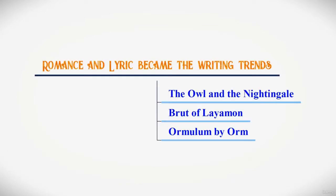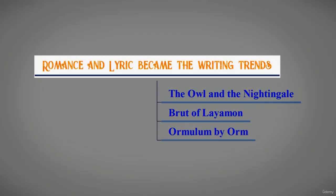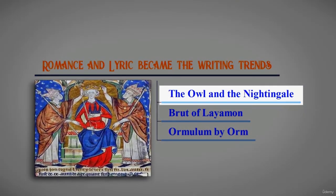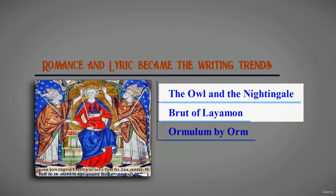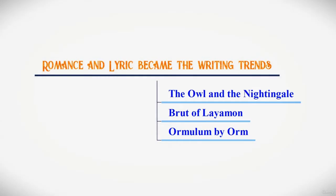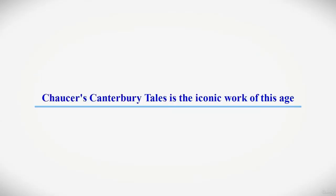Poetry of romance and lyric became the writing trends of Middle English literature. The earliest poems found under Norman influence were The Owl and the Nightingale, Brut of Layamon, and Ormulum by Orm.